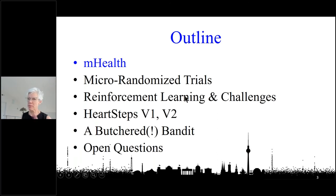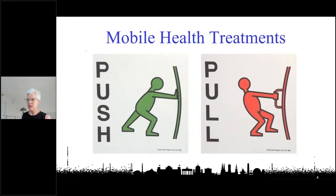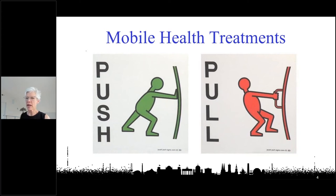We'll start with a brief review of mobile health. In mobile health — or any digital health setting — there are two types of interventions. One is a push, where the device or wearable reaches out, interrupts the person in their life, and attempts to provide ideas, suggestions, or motivation. The other is a pull, where the individual recognizes they need help and goes to the app to access that help.